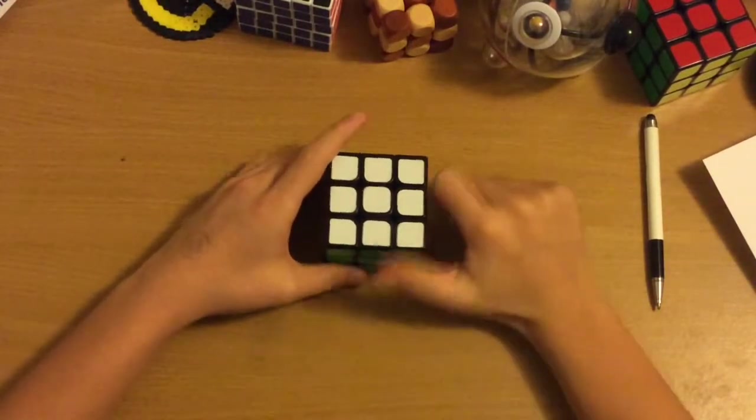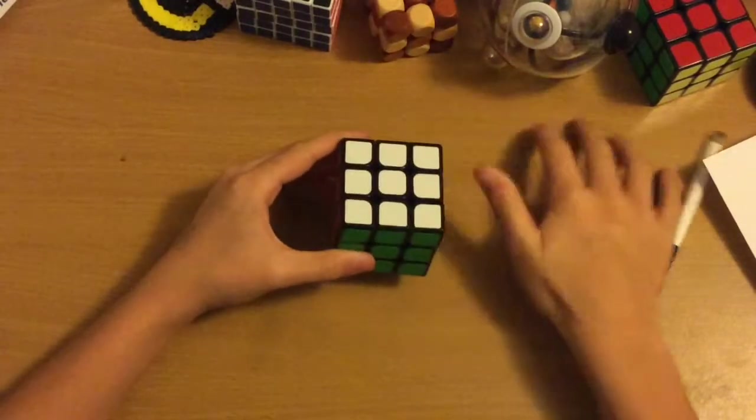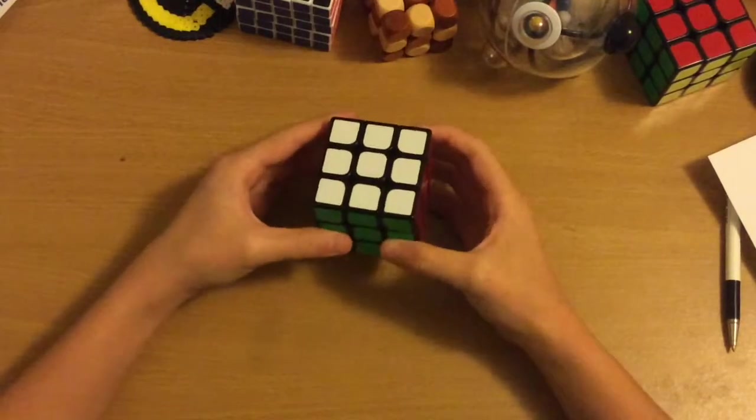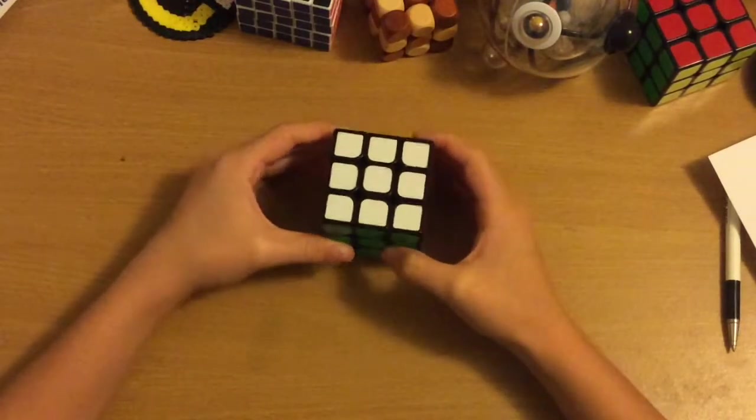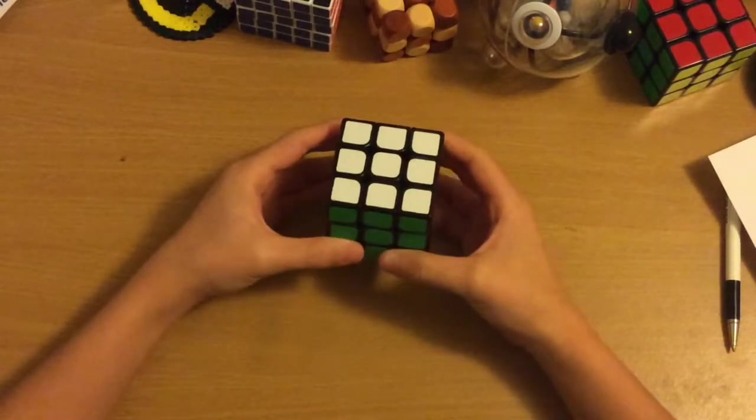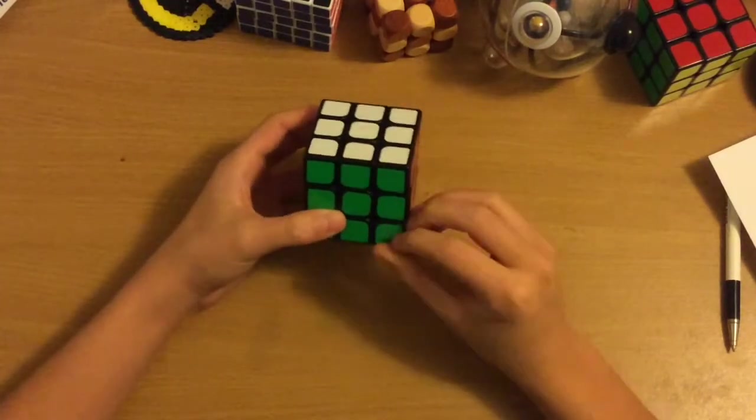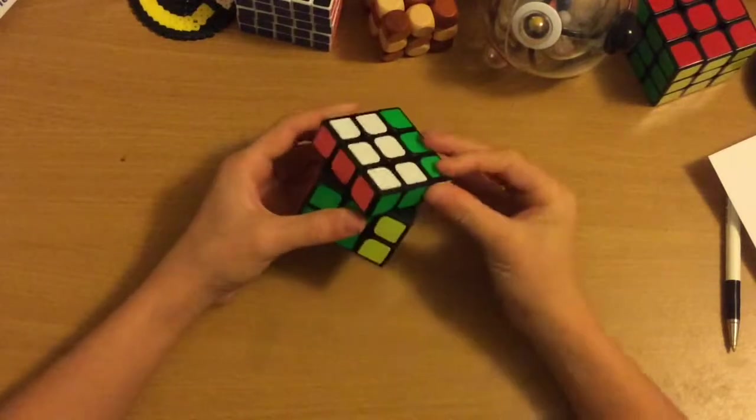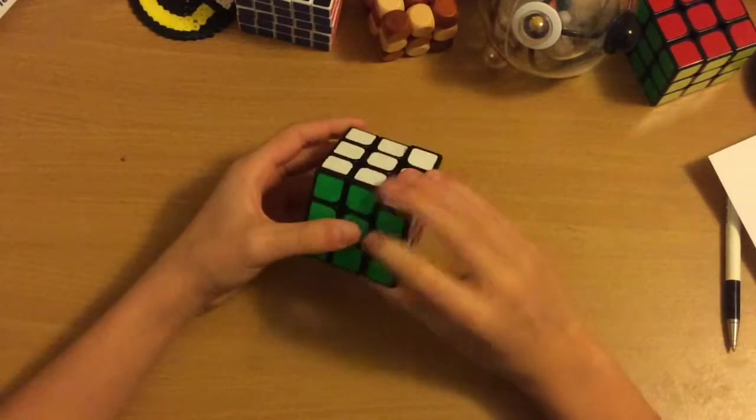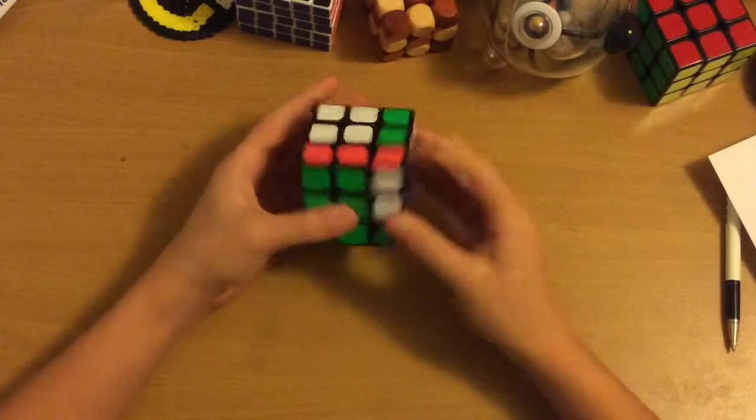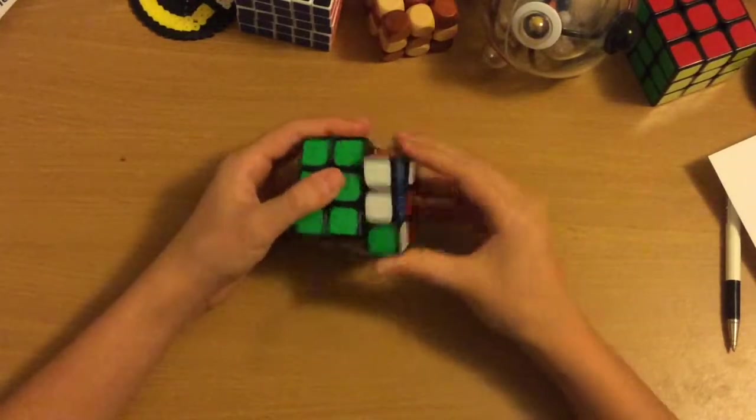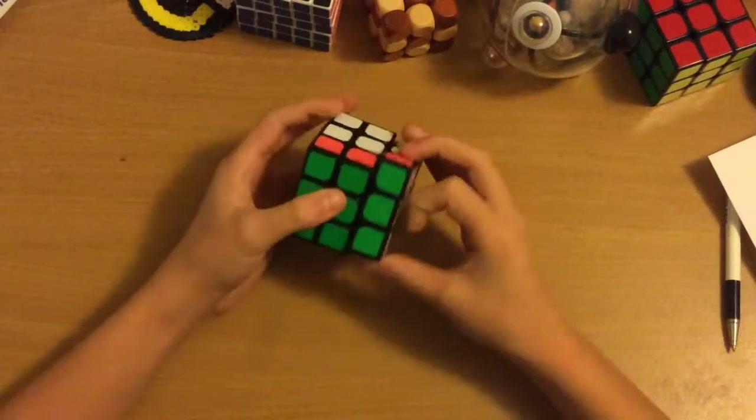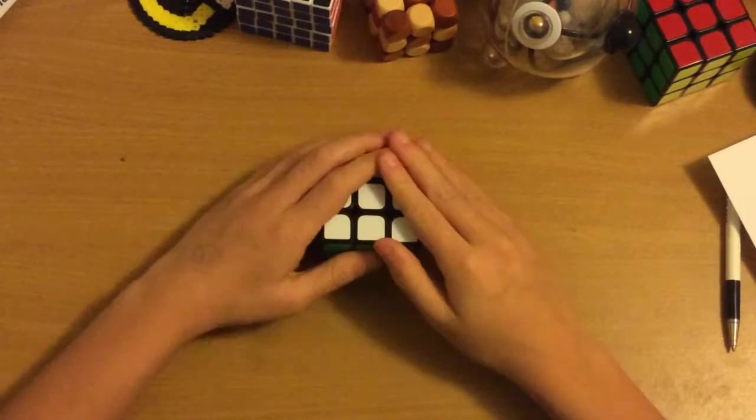I hope this video wasn't too confusing. I'm sure you'll eventually get it if you watch it enough times. But, yeah, that's called Old Pochmann, if you're wondering, for corners. I haven't really seen any other methods for blind solving other than Old Pochmann. So, yeah, again, I hope this video helped you. And, if it did, make sure you leave a thumbs up. And, I'll see you in my next video where we learn how to do the edges. So, see you guys.